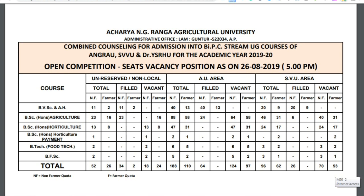In total, we have to fill out. There is only 1 seat for the veterinary course. In total, to support veterinary science and counseling, there is no chance for veterinary science. So you have to concentrate on agriculture, horticulture, horticulture payment, and food technology.